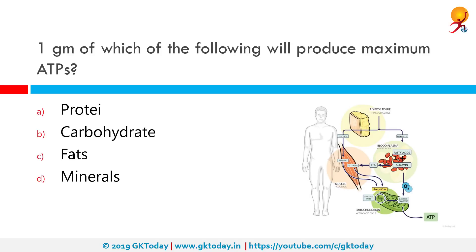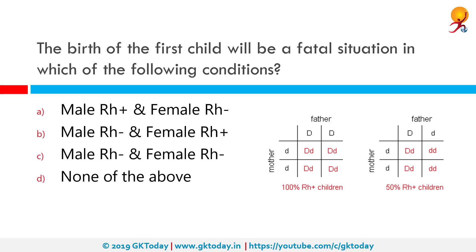One gram of which of the following will produce maximum ATPs? ATPs is a unit of energy. The correct answer is fats. When carbohydrates are scarce, the body runs mainly on fats because fats hold the most amount of energy.